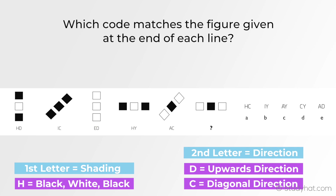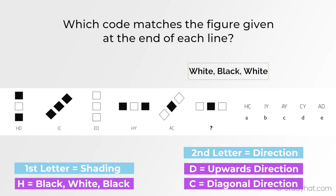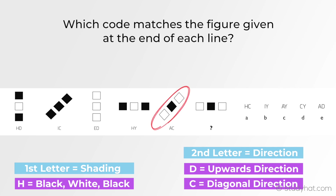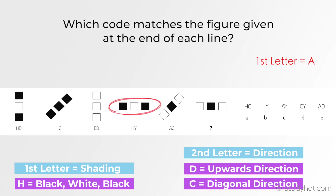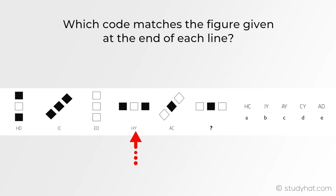What we now have is the first letter representing colour and the second letter representing direction. Looking at the figure, we need to find the code for this colour scheme, which is white, black, white. We need to find a figure with a white, black, white colour scheme — it's this one right here. Since the first letter represents shading, that means the first letter of our answer is A. Moving on to the second letter, we're looking for direction — we need a figure with the same direction, which is here. The figure HY has a horizontal position, and since we only need the second letter representing direction, the final letter of our answer is Y.